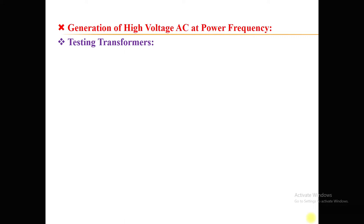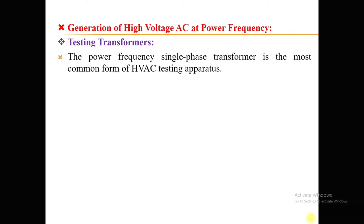Power frequency AC high voltages are basically produced using a single unit testing transformer, by connecting testing transformers in series, or by using a resonant transformer. Let us take the first case: the generation of high voltage AC at power frequency using testing transformers.